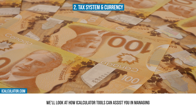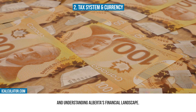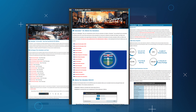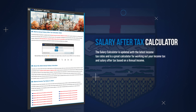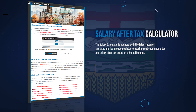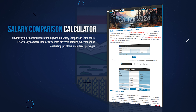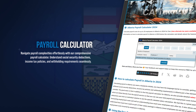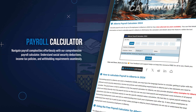Next, we'll look at how iCalculator tools can assist you in managing and understanding Alberta's financial landscape. iCalculator is home to a comprehensive suite of different tools to simplify and clarify your financial planning and decision-making. You can start by understanding your take-home pay with our salary after-tax calculator, which offers a clear view of your net income after all tax deductions. Compare different salaries with our salary comparison calculator, providing insights into where your earnings stand compared to previous years. Streamline your payroll process using our payroll calculator, which is crafted to assist in calculating salaries, taxes, and contributions for businesses.